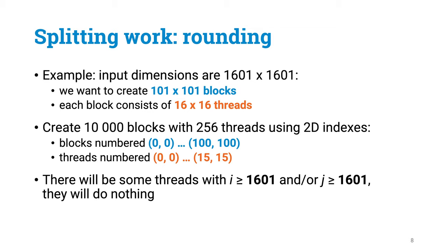One final technical detail. In the previous example, our input dimensions were a nice multiple of 16. What if this isn't the case? Well, we will simply round the number of blocks up. Then there will be some threads that would be responsible for calculating something that goes outside the boundaries. Those threads will simply do nothing. We will just see if i or j are too large, and those threads will just stop immediately.